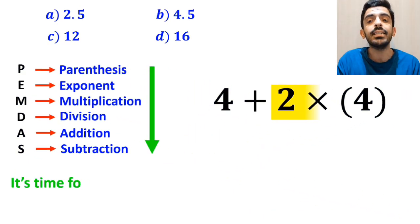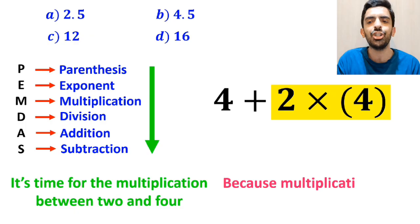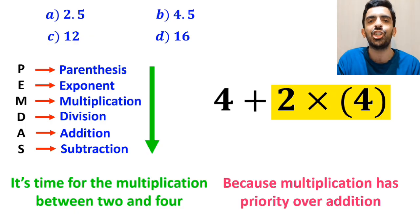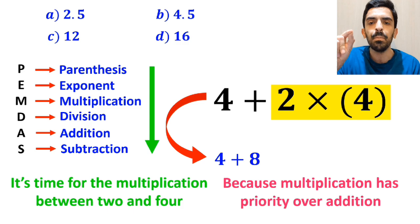In the next step, it's time for the multiplication between 2 and 4, because multiplication has priority over addition. So, instead of this expression, we can write 4 + 8, which ultimately gives us the answer 12.